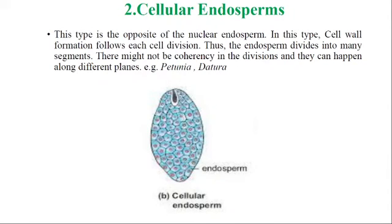The second type is cellular endosperm, which is opposite to nuclear endosperm. In this type, cell wall formation follows each cell division. Unlike nuclear endosperm where cell walls may or may not form, here every cell division produces a cell wall. Thus the endosperm divides into many segments; there may not be coherency in the division and it can happen along different planes. The best examples are Petunia and Datura.